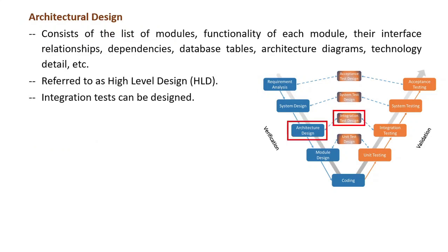Next phase is architectural design. Architectural specifications are understood and designed in this phase, which typically consists of the list of modules, brief functionality of each module, their interface relationships with the outside world, that is with other systems, dependencies, database tables, architecture diagrams, technology detail, etc. This is clearly understood and defined in this stage. This is also referred to as high-level design, that is HLD. With this information, integration tests can be designed and documented during this stage.